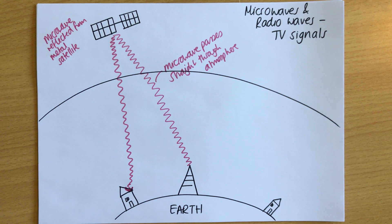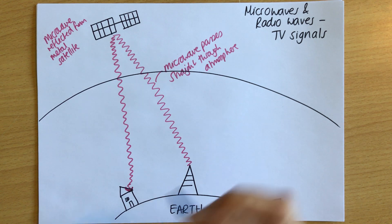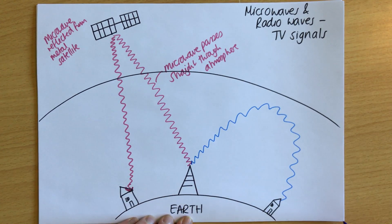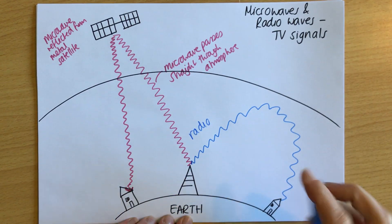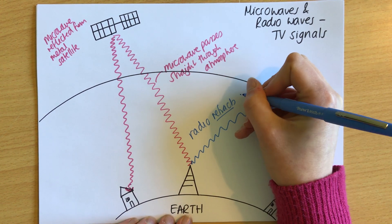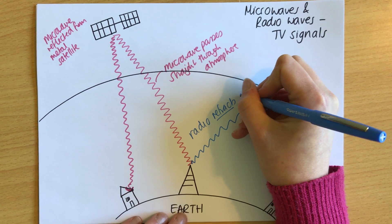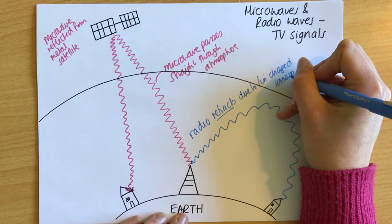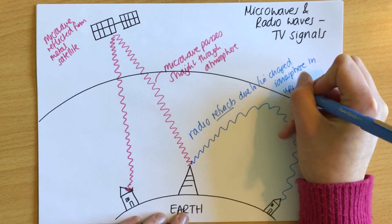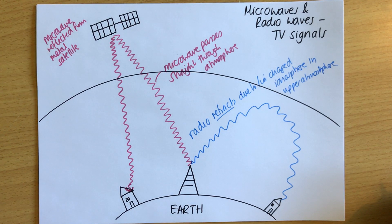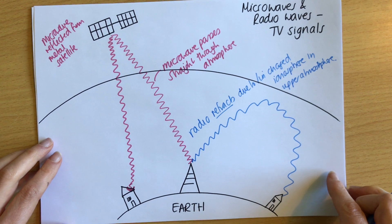Radio waves do something different. Some radio waves can pass through the atmosphere, but only a small proportion. Most radio waves bend instead — they refract due to the charged ionosphere in the upper atmosphere. This refraction means most radio waves can't get through the atmosphere to a satellite and reflect. Some, if they have a short enough wavelength and are closer to microwaves, can pass through. But most undergo this refraction and bend around rather than passing through.